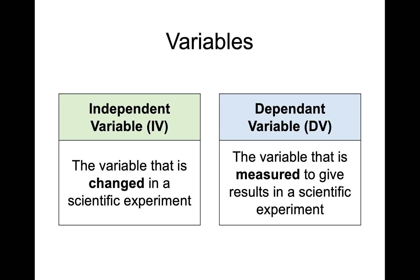In order to proceed with an experiment you then need a variable that you're going to measure. So this could be something like the height of foam, the number of bubbles produced per minute, the increase in growth — anything like this would be your dependent variable, and you measure that in order to give the result of a scientific experiment.